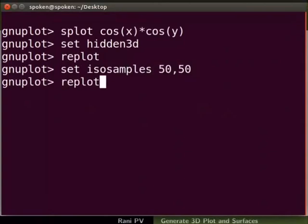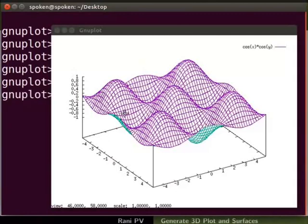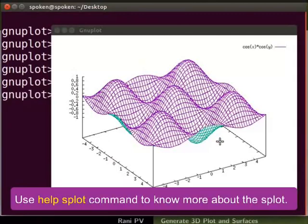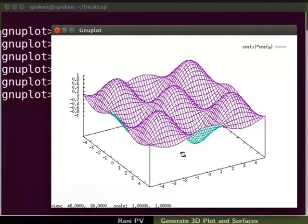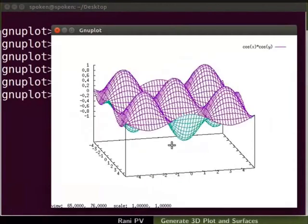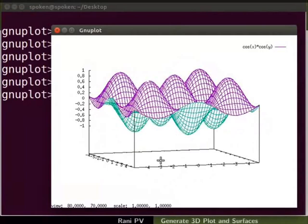Let's divide the surface into a fine grid. Enter the command set isosamples 50,50. Replot to notice a fine mesh defining the surface. Use the command help splot to know more about the splot command. Hold down the left mouse key and move the mouse to rotate the graph. The viewing angle changes in the graphics window while rotating the graph.